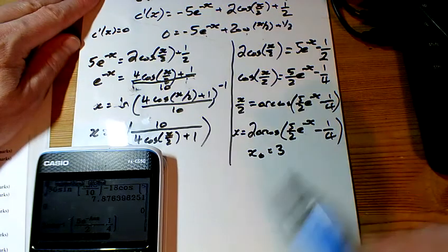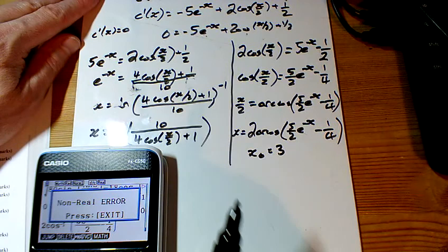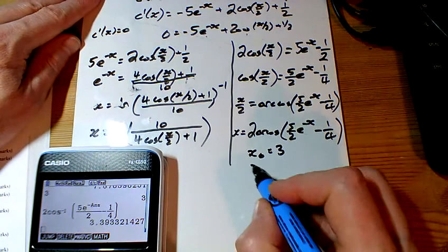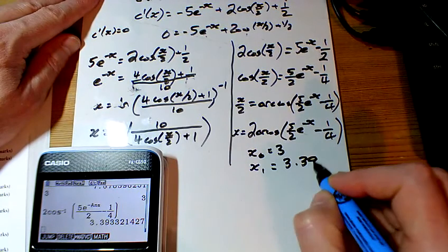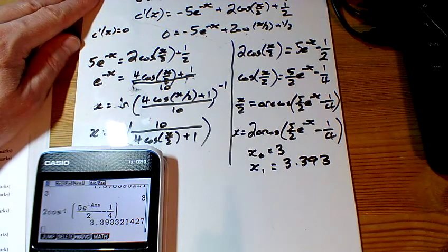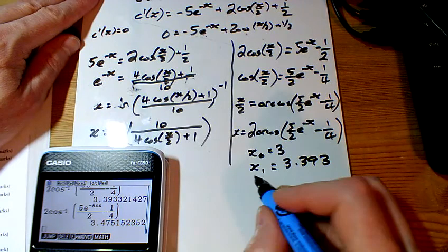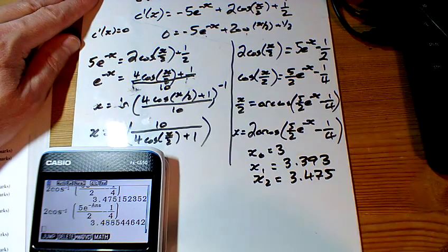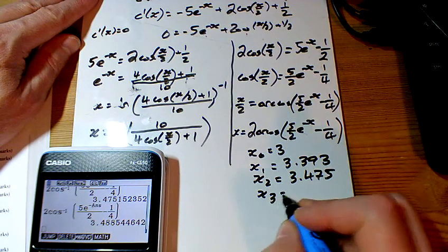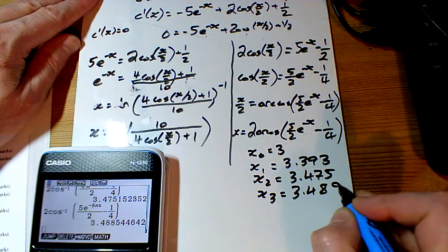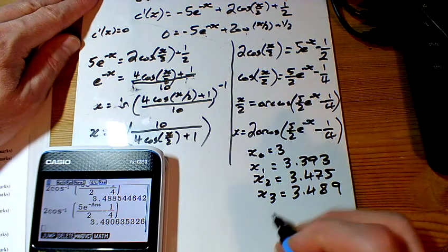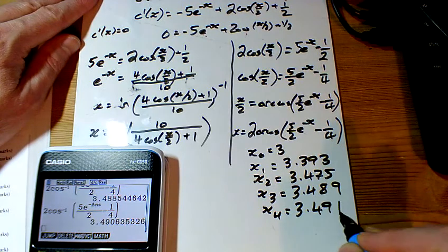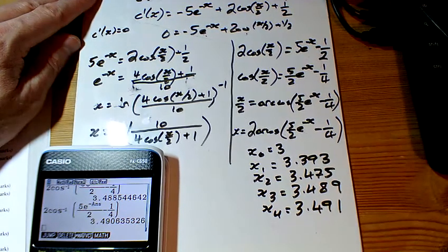So I've put a first guess of 3 into the calculator. And I've got my next guess as 3.393, just three decimal places. The next one at 3.475. 3.489, being careful on that one there. And we're pretty close now, 3.491. So there's the guesses there.